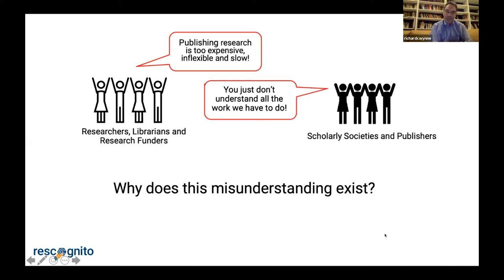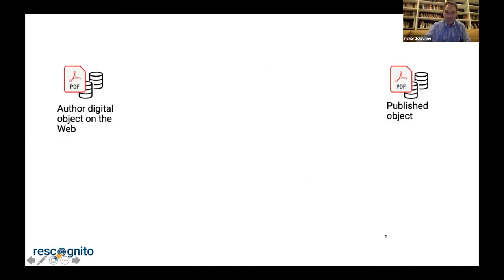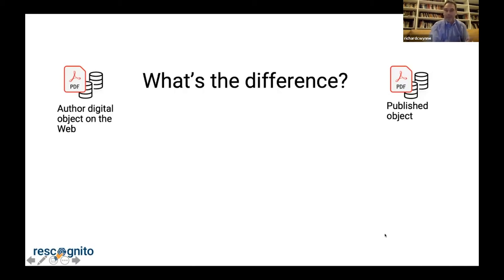In the remaining seven minutes that I have, I'm going to try and explore that and come up with some possible solutions, which means I'm going to have to talk very, very fast. The model I'm going to give you to think about is to ask what the differences are between an author object that's been placed on the web and a published object.